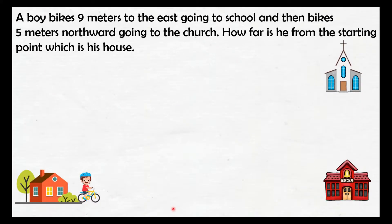Problem number 1. These are example problems where we apply solving about radicals. A boy bikes 9 meters to the east going to school, and then bikes 5 meters northward going to the church. How far is he from the starting point, which is his house? In these kinds of word problems, we first need to illustrate or draw the problem to visualize what we are looking for and to determine what equation or formula to use.